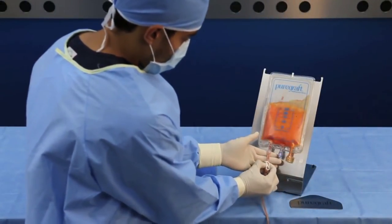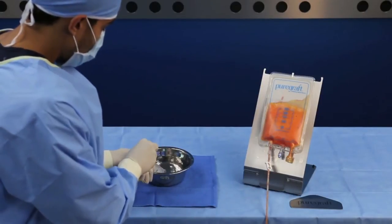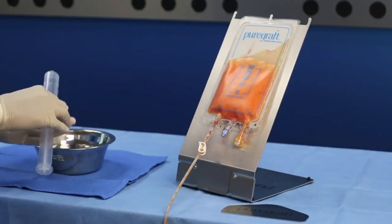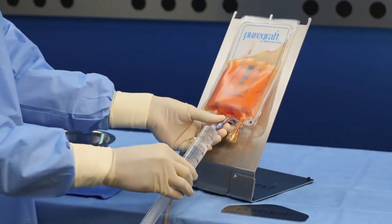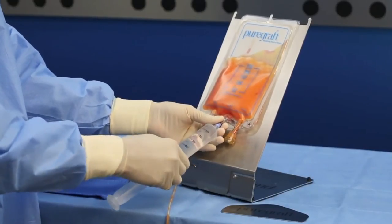The next step is to wash the tissue. There are two alternative methods for transferring the lactated Ringer's into the PureGraft. Both methods will be demonstrated in this video. The first method uses a syringe, the second method uses the inlet tubing set. You may use whichever method you prefer.